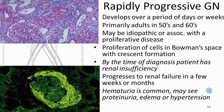Rapidly progressing glomerulonephritis sets on quickly and moves very fast. It's typically not caused by strep — often it's caused by things like lupus, which damages the membrane similarly. It typically affects people over 50 to 60. What makes it distinct is that fibrous proteins accumulate in Bowman's capsule, forming thick scar tissue. This can be fatal within days to weeks.